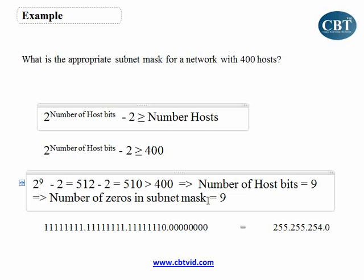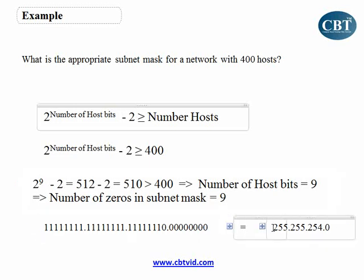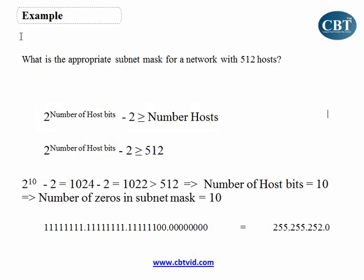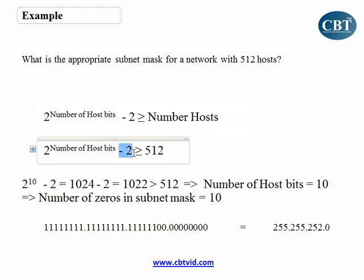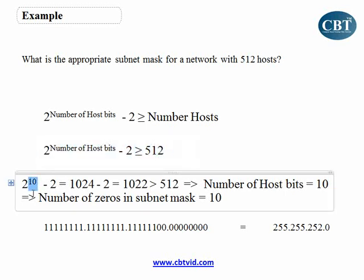The number of zeros in the subnet mask becomes nine. Therefore, your subnet mask becomes this. Now, if you look at this subnet mask and the previous one, you won't see much difference. But the difference comes when you get a question like this — where you have 512 hosts and want to assign the appropriate subnet mask. If you don't use the minus two, your result is two to the power of nine, which is 512 equal to 512, giving subnet mask 255.255.254.0. But using the correct formula, you get 10 host bits, meaning 10 zeros in the subnet mask, and here is your correct subnet mask.